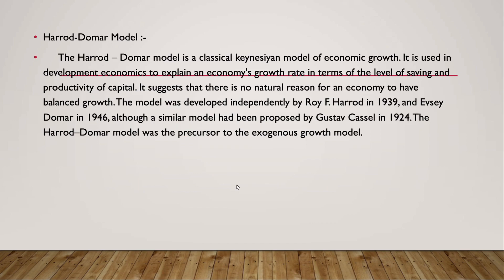The Harrod-Domar model is a classical Keynesian model of economic growth. It is used in development economics to explain an economy's growth rate in terms of the level of savings and the productivity of capital.